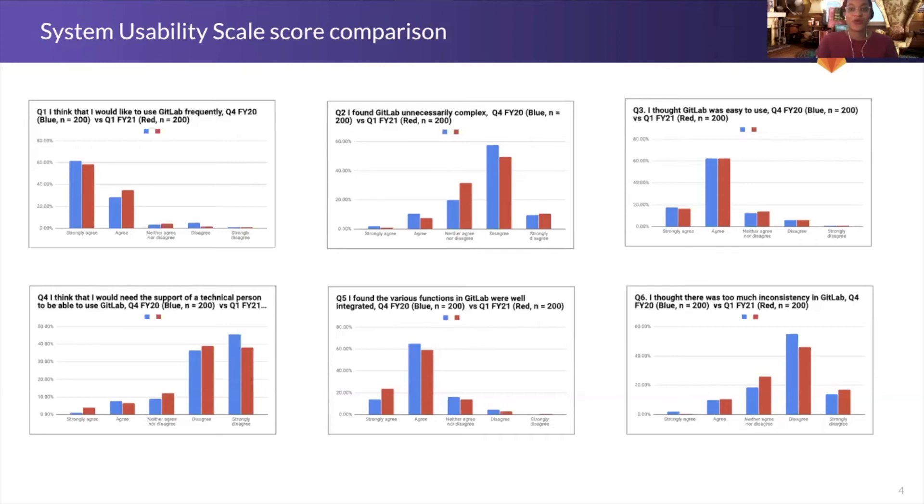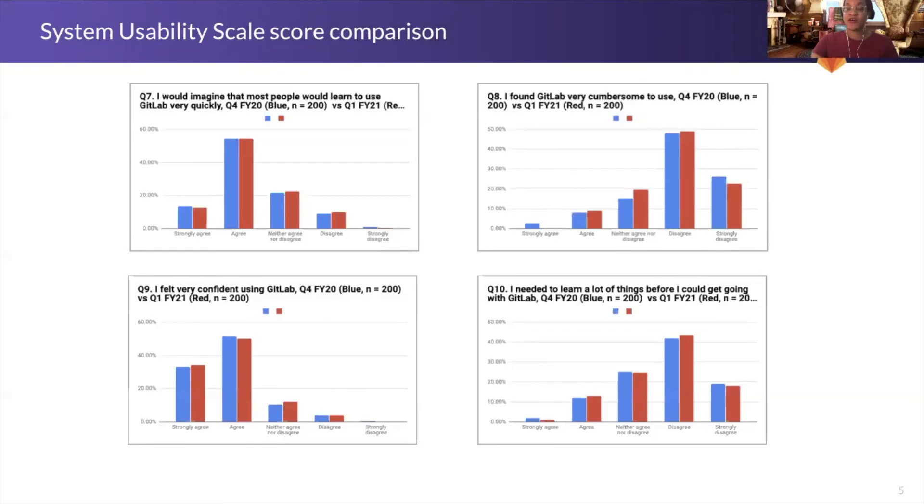This is pointing to us that even though we'd like to get a higher score, at least over the quarters, we're seeing some consistency in how users are perceiving the product. You can take a look at these examples, and this also continues for the rest of the questions in the scale.